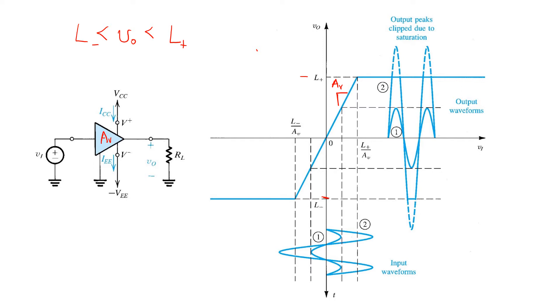The linear relationship is maintained as long as VO stays within these limits. VO hits these limits at values of VIN equal to the upper limit divided by the gain AV, and the lower limit divided by the gain AV.